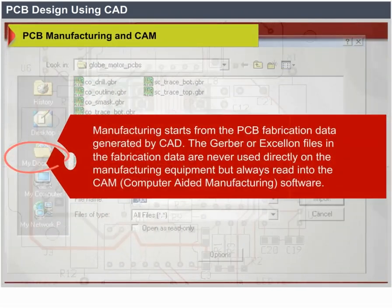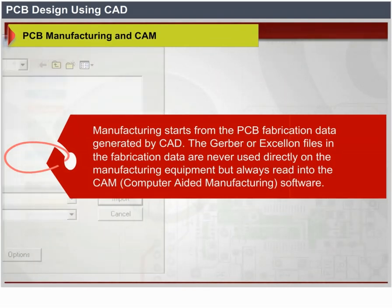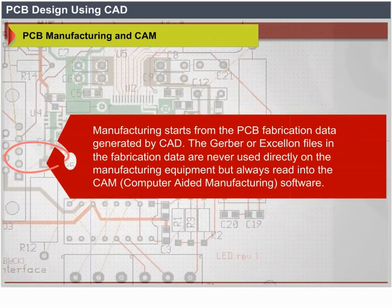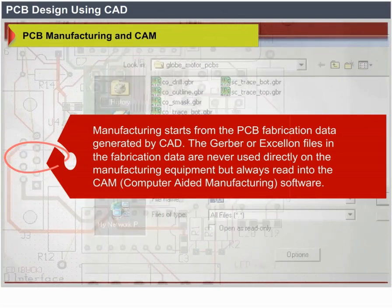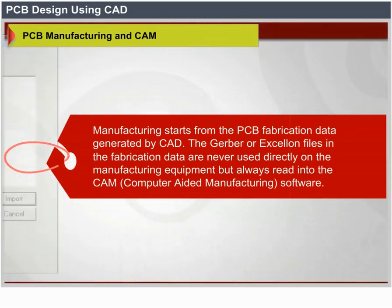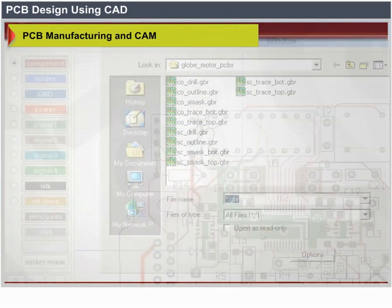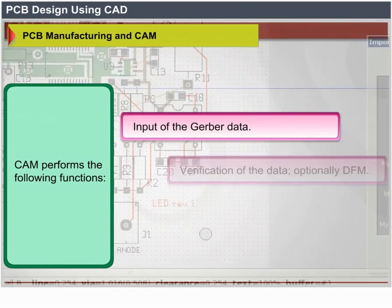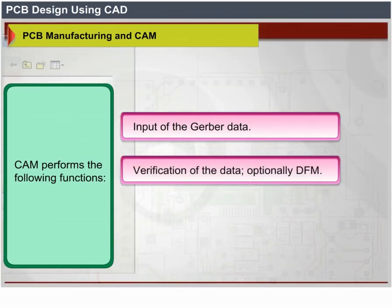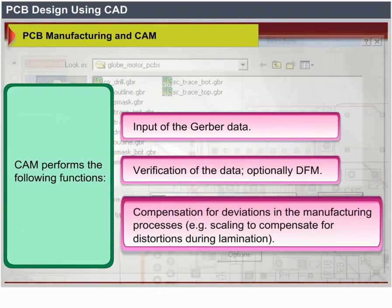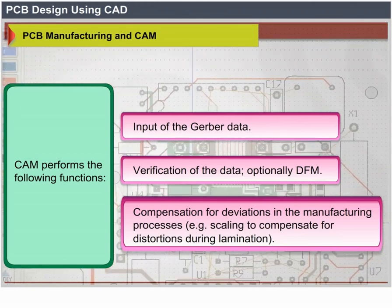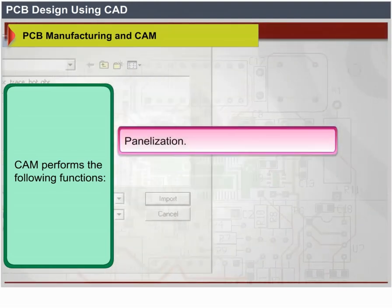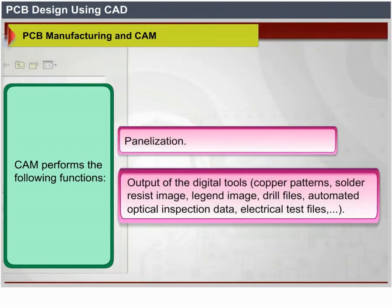Manufacturing starts from the PCB fabrication data generated by CAD. The Gerber and Excellon files in the fabrication data are never used directly on manufacturing equipment but are always read into the CAM software. CAM software performs functions including: input of Gerber data, verification of the data (optionally DFM), compensation for deviations in the manufacturing process (e.g., scaling to compensate for distortions during lamination), and panelization.